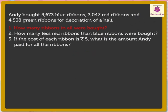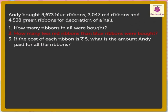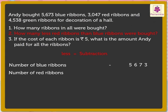Now let us find the answer to the second question: how many less red ribbons than blue ribbons were bought? As the word 'less' is used, we have to subtract the numbers. Number of blue ribbons is 5673 and number of red ribbons is 3047. Subtracting, we get the answer as 2626. Thus Andy bought 2626 less red ribbons than blue ribbons.